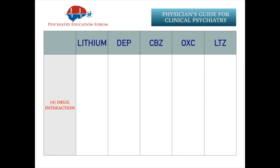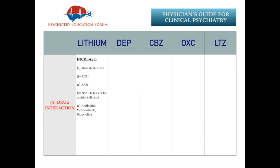Very clinically important topic. We'll begin with our favorite lithium again. Lithium level can increase with many commonly used medications for medical comorbidities. First and foremost is antihypertensive medications, including thiazide diuretics, ACE inhibitors, and angiotensin receptor blockers. The second common class known to increase lithium level is non-steroidal anti-inflammatory drugs like ibuprofen, with exceptions including aspirin and sulindac. Antibiotics including metronidazole and tetracycline also carry risk of increasing lithium level.